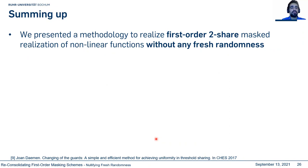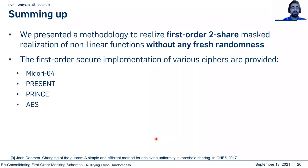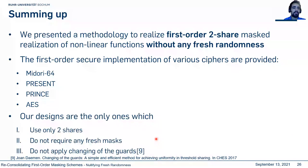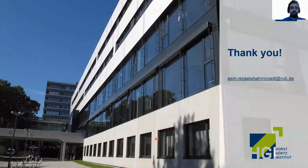In this paper, we provided a methodology to realize first-order two-share masked implementations of nonlinear functions without any fresh masks. We introduced, for the first time, secure AND gates with two and three inputs and no fresh masks, as well as the Midori S-box and PRESENT S-box. We applied our technique to PRINCE and AES, and observed no leakage in practice. Our designs are, to the best of our knowledge, the only ones using only two shares without any fresh masks and without applying a change of guards. Thank you for your attention.